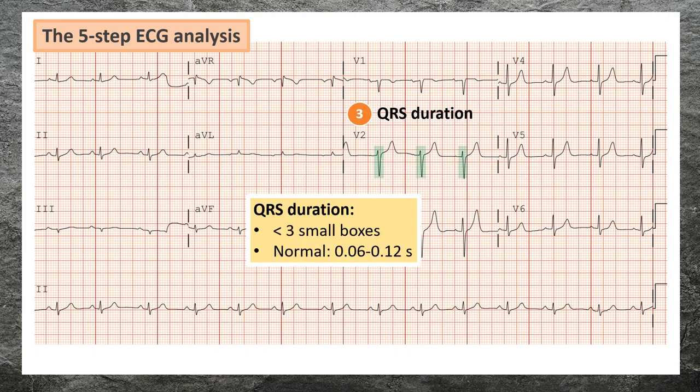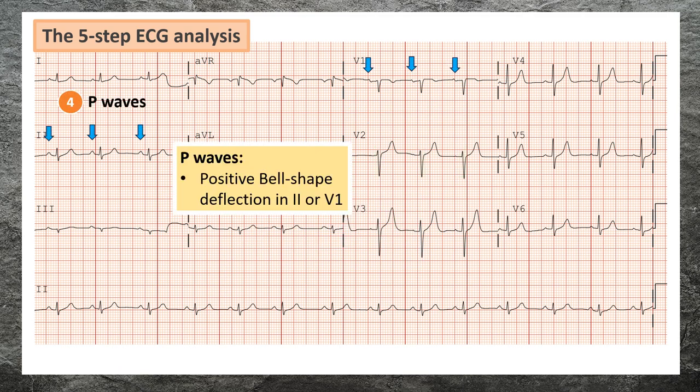Step three: determine the QRS duration. The QRS complex represents ventricular depolarization. To measure the QRS complex, count the number of small boxes from the beginning to the end of the QRS complex, then multiply by 0.04 seconds. The normal range of QRS duration is 0.06 to 0.12 seconds.